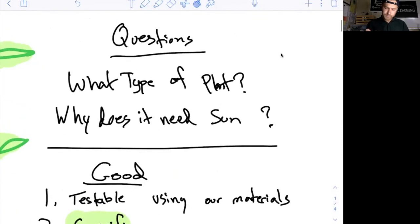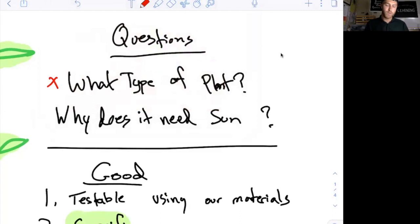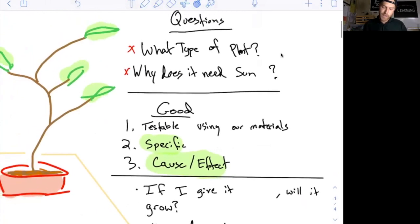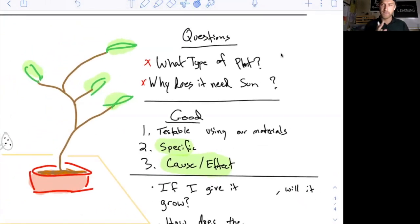So let's look at our two questions. The first one — what type of plant is it? — there's nothing wrong with that, but you could just Google the answer. That's an identification type of question, not cause-and-effect. Why does it need sun? That's a great question, but it's complex — you'd need to understand chloroplasts and photosynthesis. That 'why' is open-ended and doesn't really hit our cause-and-effect category.